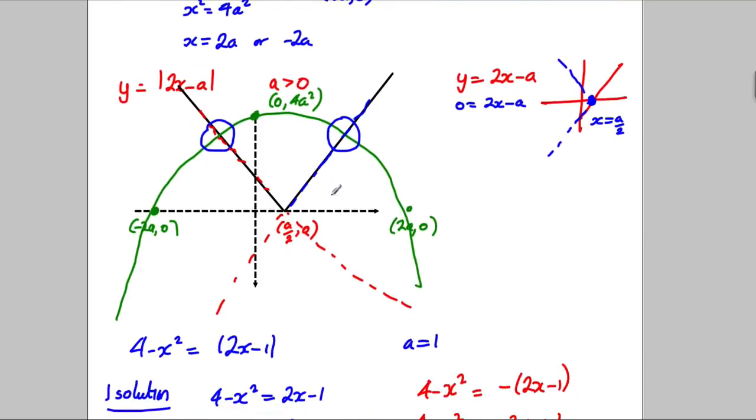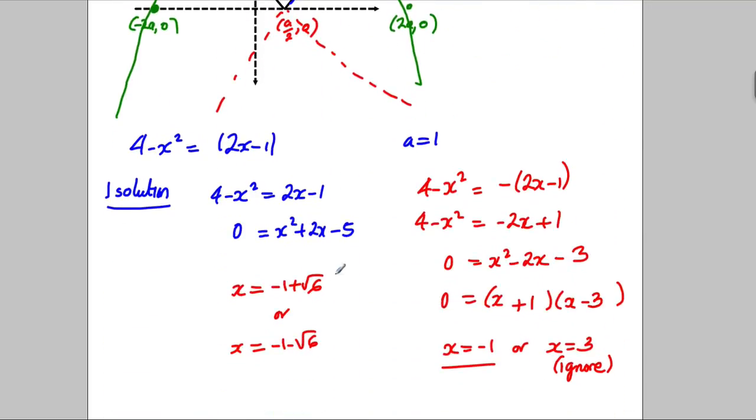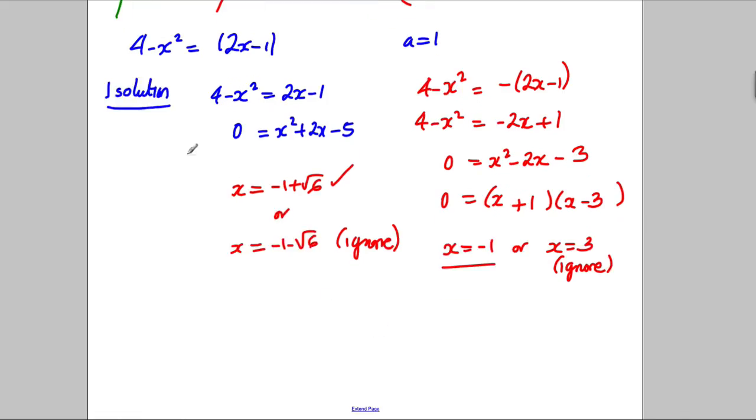Now, clearly, the solution I want here is where the x is a positive number. So, I'm going to want that one. So, I'm going to ignore this one here. So, the solutions, therefore, are going to be x equals negative 1 plus root 6 or x equals negative 1.